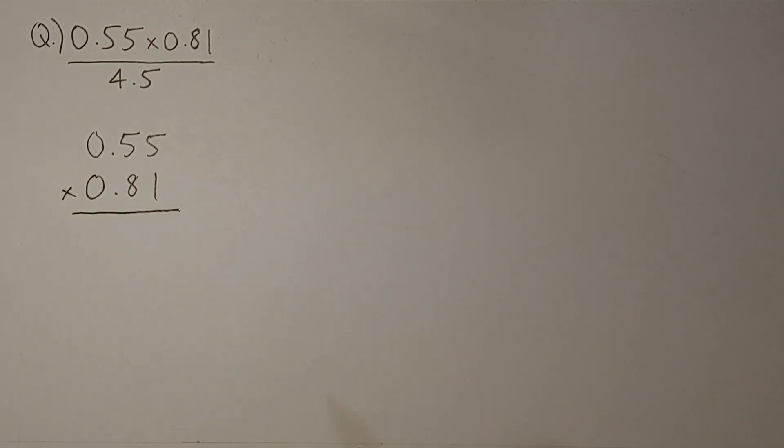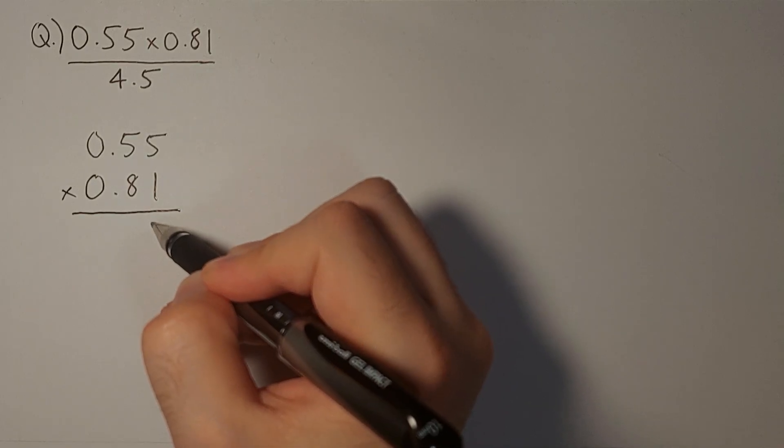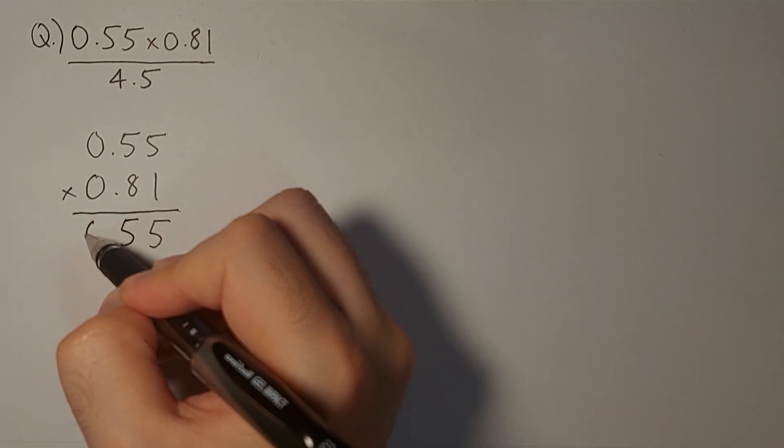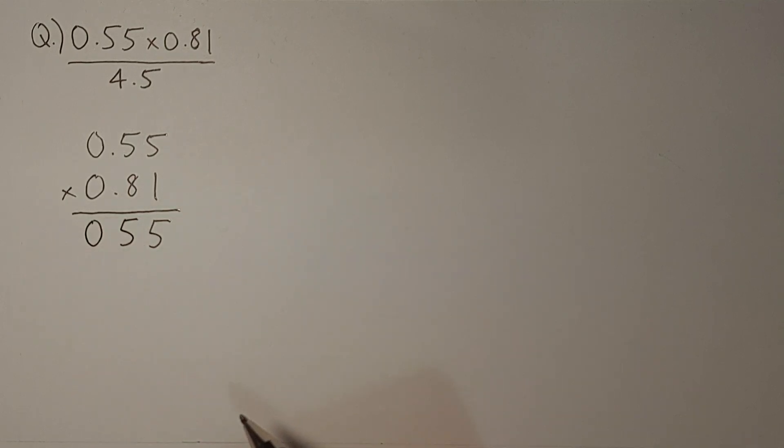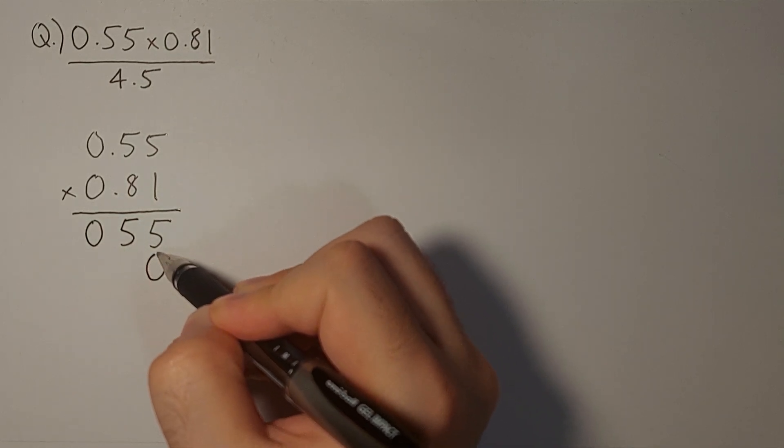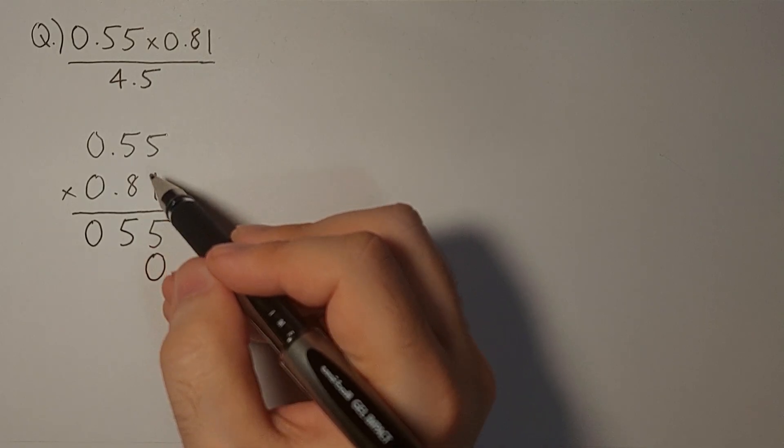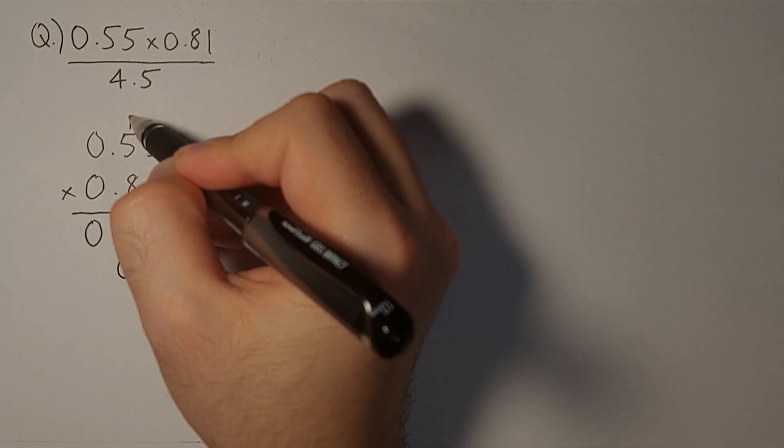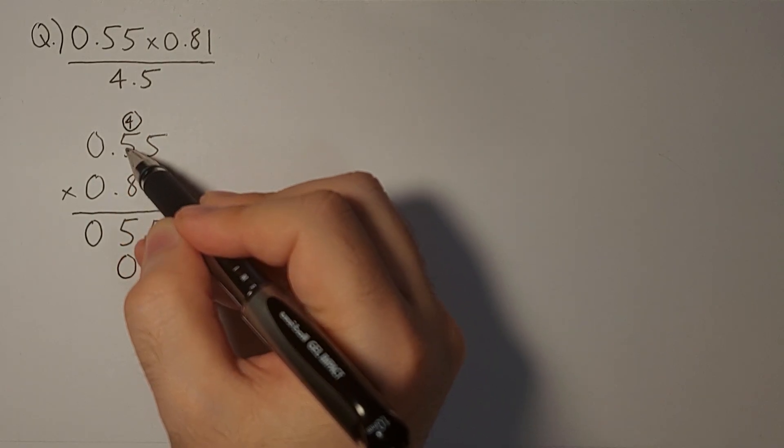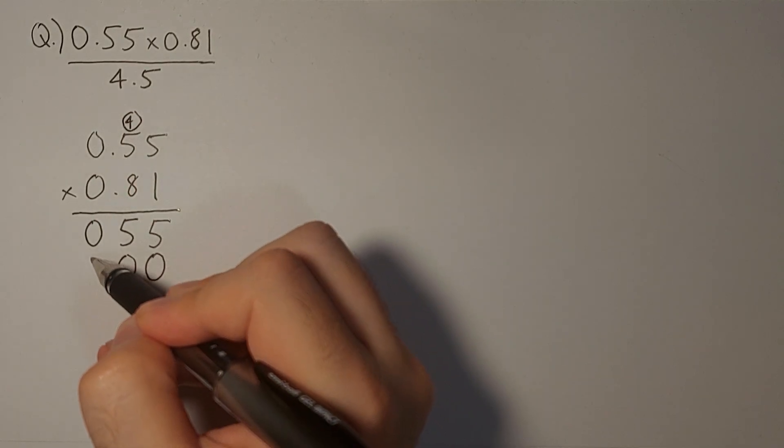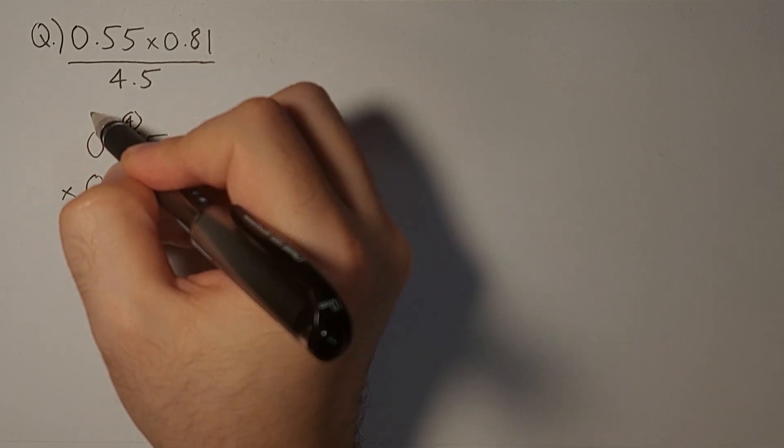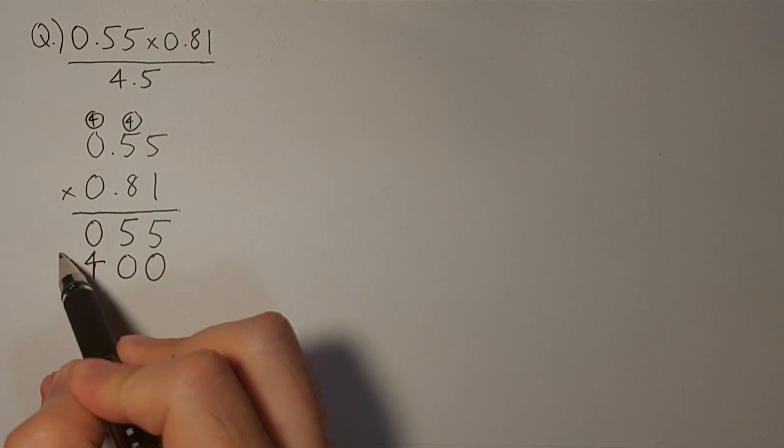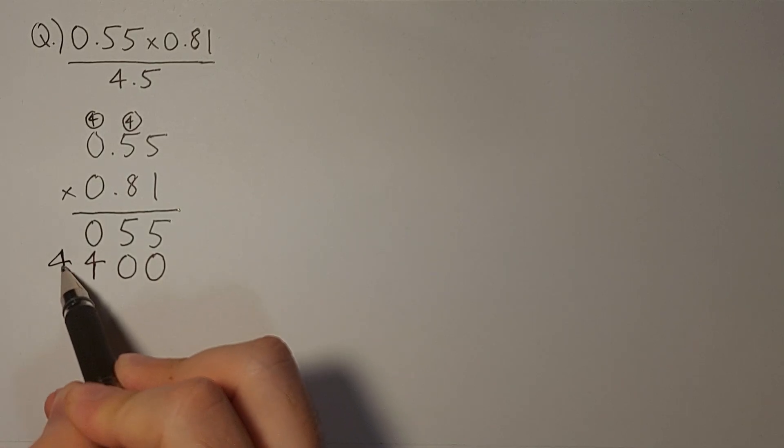Now let's start the multiplication. 1 times 5 is 5. 1 times 5 is again 5. And 1 times 0 is 0. Then let's move one row down. Add a 0 and start multiplying with 8. 8 times 5 is 40. Carry the 4. 8 times 5 is 40, plus 4 is 44. Carry the 4. 8 times 0 is 0, plus 4 is 4.